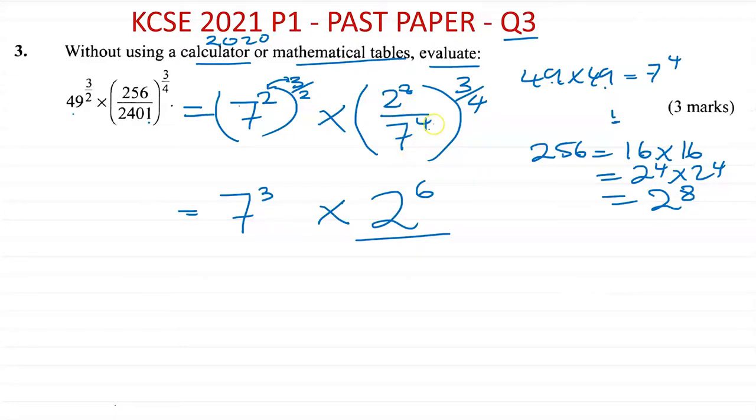And the bottom number needs to be multiplied by this power as well, because the bracket goes all the way down. So seven to the power of four times three quarters. Four divided by four is one, and then I'm left with one times three, which is three. So over here, I have seven to the power of three.